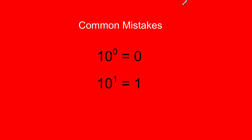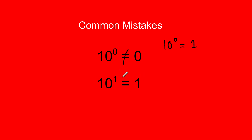Here are a couple of things to watch out for. Many people think 10 to the zero power equals zero — it does not. Anything to the zero power equals one. Also, 10 to the first power does not equal one — that's one power of ten, so it equals 10.